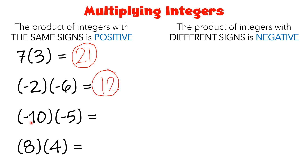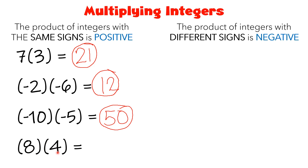Another one: negative 10 times negative 5. Both are negative — they have the same sign — so you will have a positive answer. 10 times 5 is positive 50. Another one: 8 times 4. Both are positive, so your answer will be positive 32.